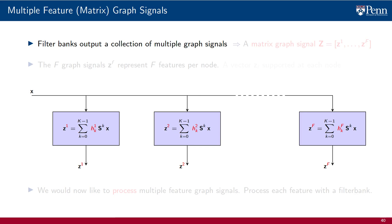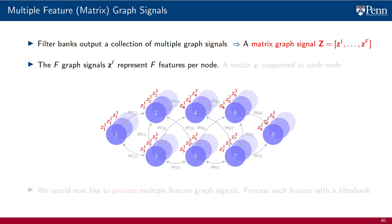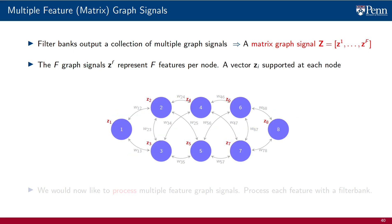The output of a graph filter bank is a collection of multiple graph signals, something we represent with a matrix graph signal Z. Each of these columns is a graph signal varying from Z superscript 1 to Z superscript F. The collection of these F graph signals represents a collection of F features per node, a book with many pages, each of which is a graph signal. It equivalently signifies the presence of a vector ZI with F components supported at each node.